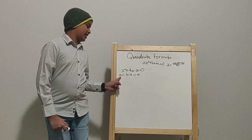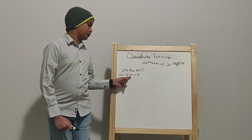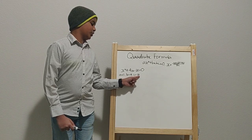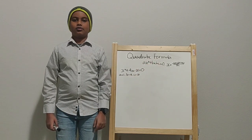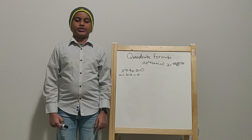As you can see, a equals 1, b equals 4, and c equals negative 21 if you're looking at this quadratic equation here. Now, let's go ahead and solve this.